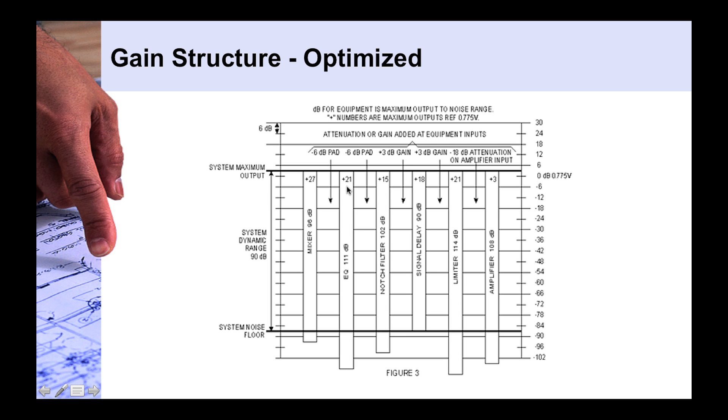And likewise up here, if this one can generate plus 21 dBu out, and this one can only handle plus 15, that's a difference of 6. This thing's sending out a signal that's 6 dB hotter than this notch filter can handle. So we've got to put a 6 dB pad at the input of this notch filter here. And going forward, of course, this one can output up to plus 15, but this one can handle a greater signal. So we're not attenuating, but we actually have to boost the signal after the notch filter has already maxed out its capability. So at the input of our signal delay, we can boost the signal another 3 dB.